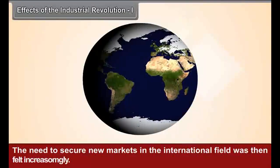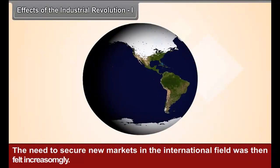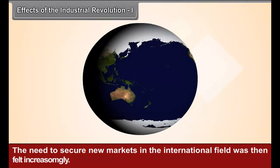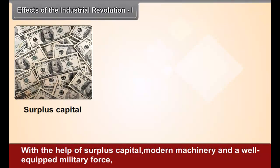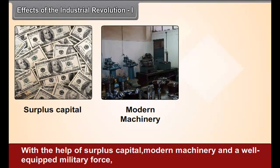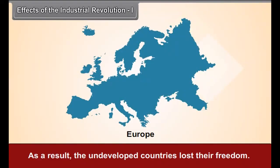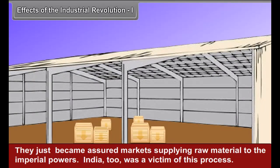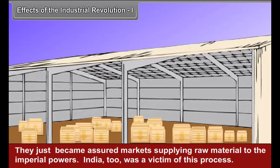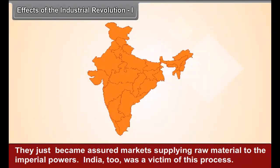The need to secure new markets in the international field was increasingly felt. With the help of surplus capital, modern machinery, and a well-equipped military force, European nations began to expand their empires in Asia and Africa. As a result, the undeveloped countries lost their freedom and became assured markets supplying raw material to the imperial powers. India too was a victim of this process.